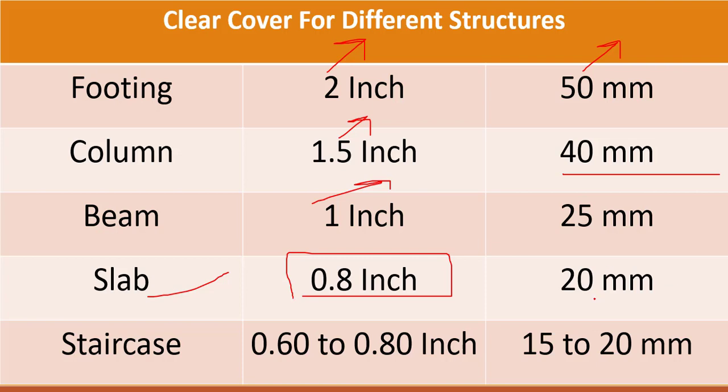But remember, I'm repeating this: if the value is given on the drawing, take that particular value, whether it is 0.2, 0.3, or 0.4 inches. You cannot use these values if the values are given on the drawing. For staircase, 0.60 to 0.80 inches as clear cover means 15 to 20 millimeters.